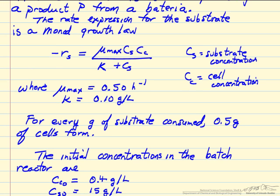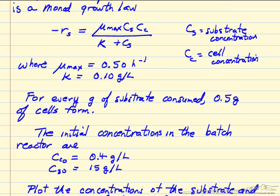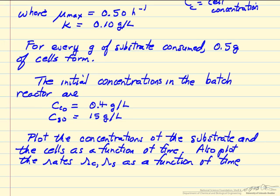We also know for this system that for every gram of substrate that's consumed, 0.5 grams of cells form. Here are our initial concentrations. The concentration of cells is relatively low, and the concentration of substrate is relatively high.